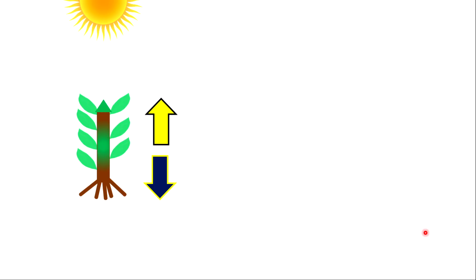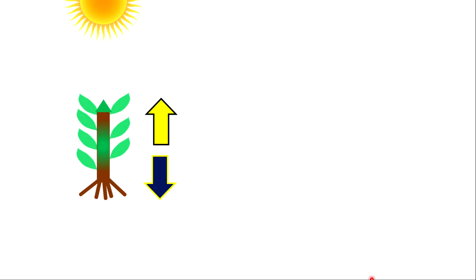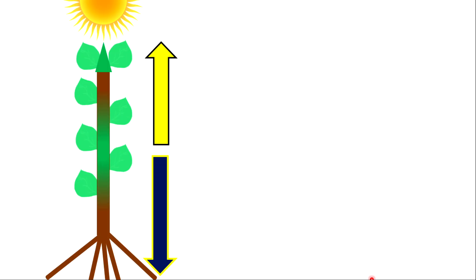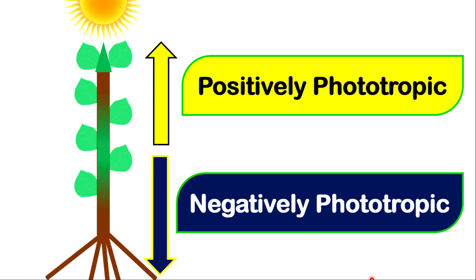Now we want to conclude something. If we place light directly above the plant, what you notice here is that the shoot goes towards the light and the root goes away from the light. We can now conclude that shoot is positively phototropic while roots are negatively phototropic.